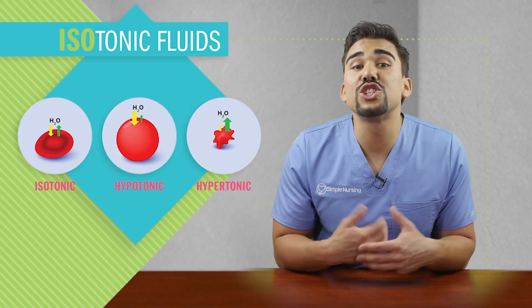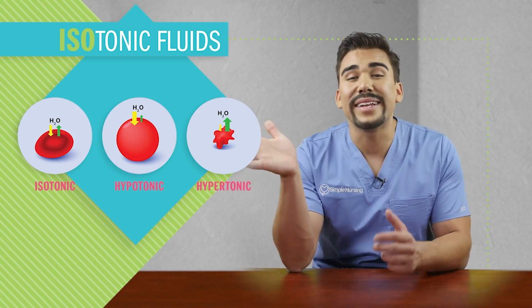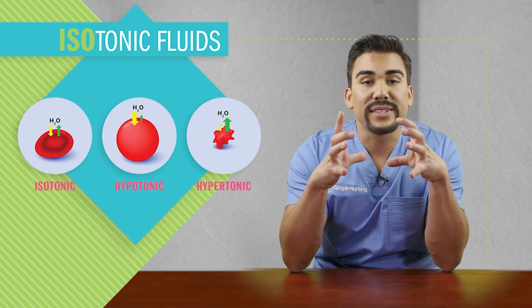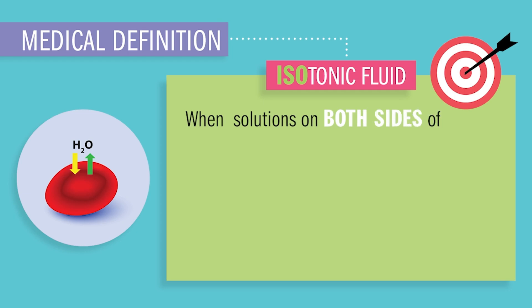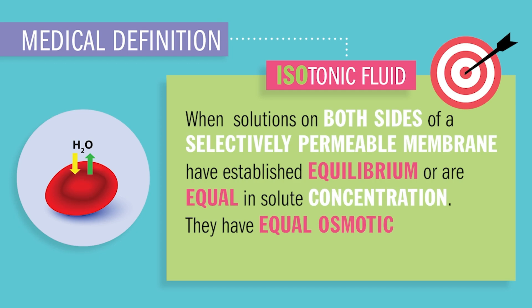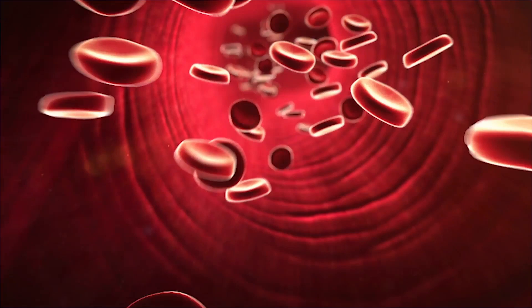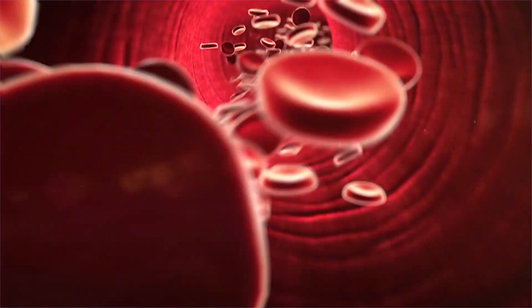Finally, let's talk about isotonic fluids — these are iso-perfect. Not too big, not too skinny, causing no fluid shifts. Isotonic fluids are equal in solute concentration to normal human blood. They have equal osmotic pressure so there is no fluid shift. Fluid remains intravascularly inside the blood vessel, and they don't cause any fluid shift because the osmotic pressure is the same both inside and outside the cell — so it's iso-perfect with a perfect balance.